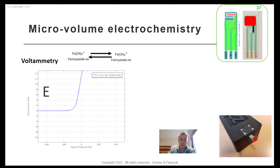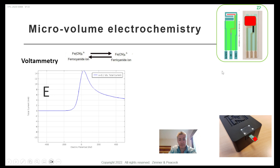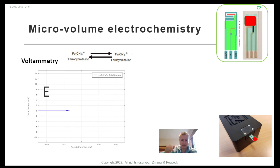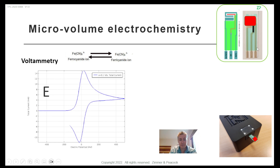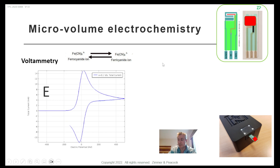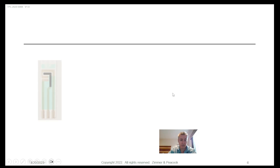You can get a perfectly good cyclic voltammogram out of something like a 50 microliter drop. When you look at this setup, there are no trailing cables, no glass or screwing caps. Just pipette the solution on, it sits on the tip of the electrode, all the electrodes are immediately in place, and you can get good quality cyclic voltammetry out of that with really no issues.